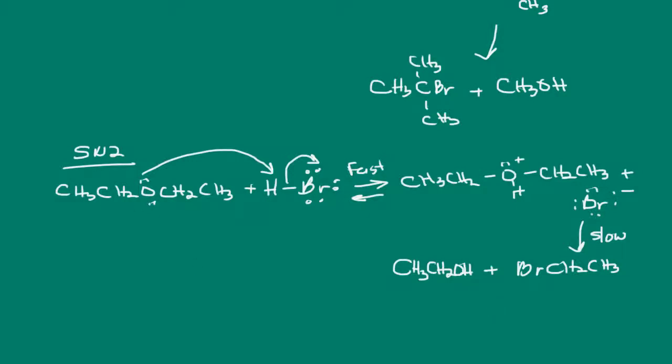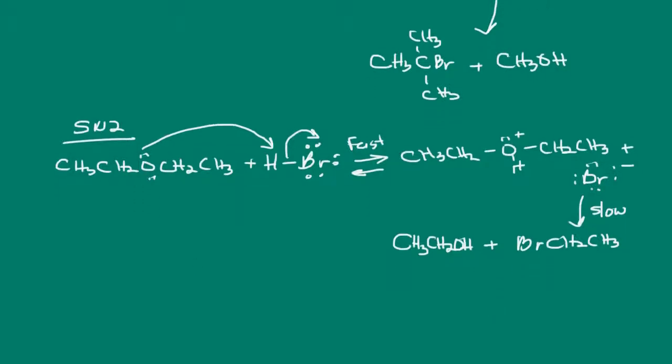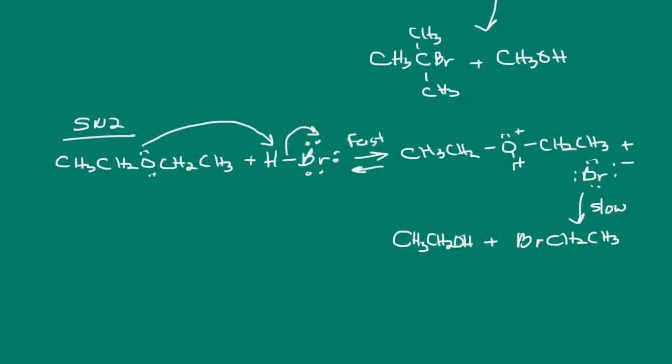In this case here, we had a symmetrical ether, but what if we had something different? What's going to happen is the nucleophile, in this case our bromide ion, will attack the less sterically hindered carbon. So, in this case we would end up with methyl bromide and ethanol.